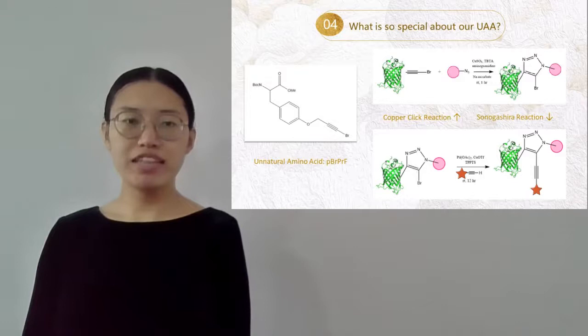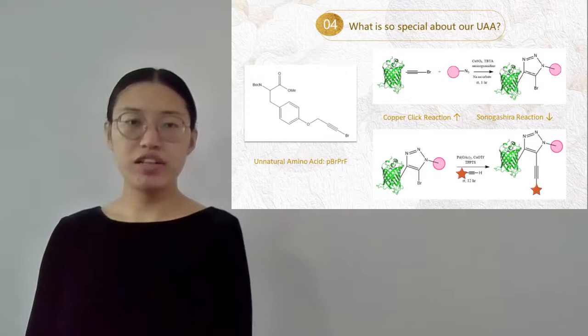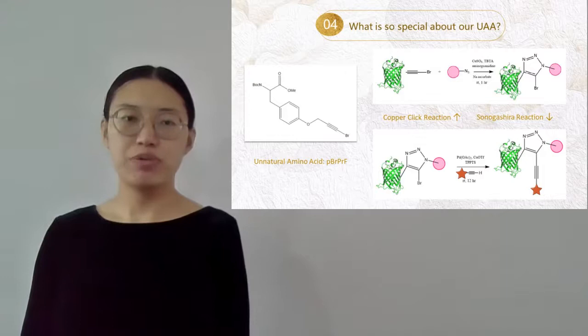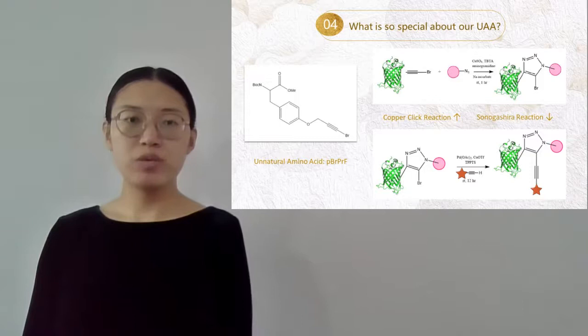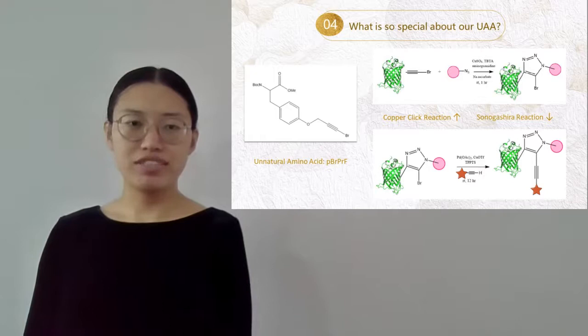Then it undergoes a copper-click reaction with a subsequent synagoguery reaction. Each reaction adds one more functionality into the protein. So as we can see at the bottom right, the protein has only one unnatural amino acid but three functional groups. That is why our method is efficient.